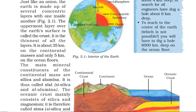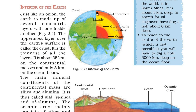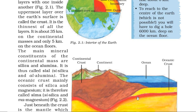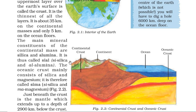The crust is the thinnest of all the layers. It is about 35 km on the continental masses, but if we go to the ocean floor, it is only 5 km. So here it is 35 km for continental and 5 km for ocean.